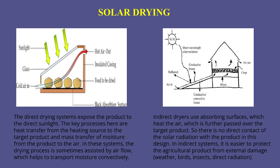In the direct solar dryer, the direct drying system exposes the product to direct sunlight. The key process here is heat transfer from the heating source — the sun. Solar energy falls through the glass cover to the crop. In these systems, the drying process is sometimes assisted by airflow which helps transport moisture convectively. Convection takes place and the moisture is taken away by the air flowing from the bottom. Hot air has a tendency to rise upward, and hence the moisture content of the crop goes out with the hot air from the top.